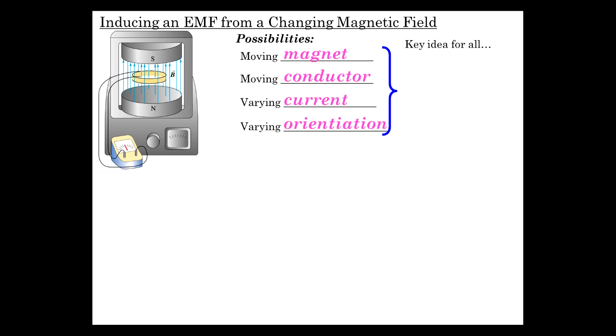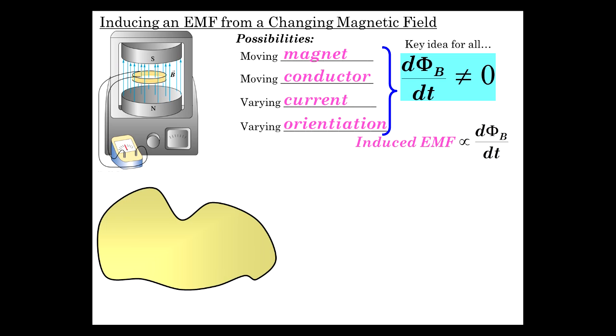The key thing for all of this is that there's a time rate of change of magnetic flux. In other words, dΦ_B/dt is not zero. So this induces an EMF. It's called an induced EMF. That changing magnetic field produces a voltage, establishes an EMF within the conductor, causing a current to flow. And it's proportional to the rate at which that magnetic flux changes.